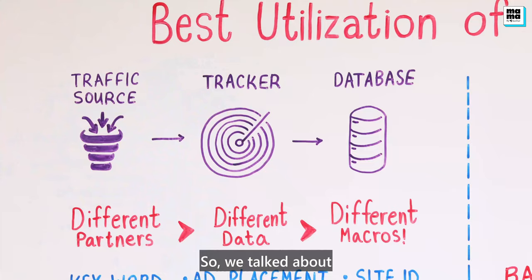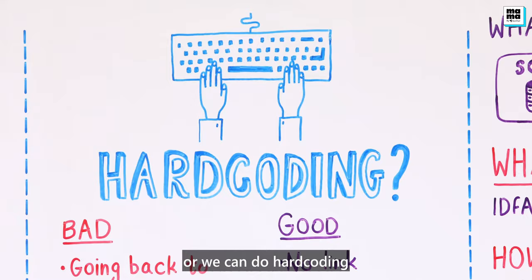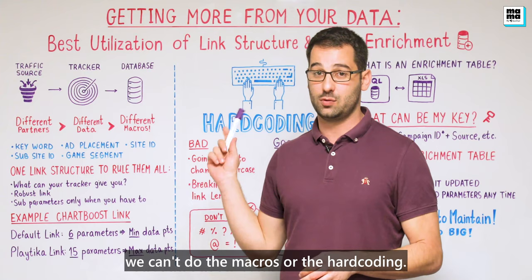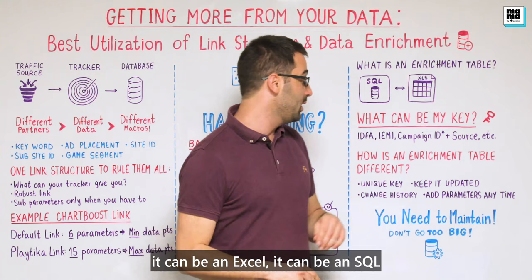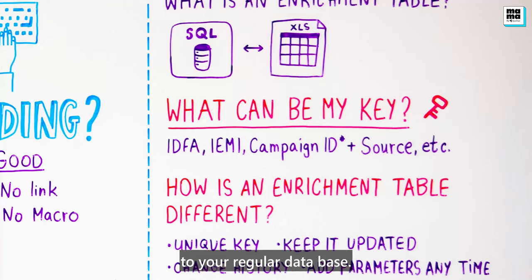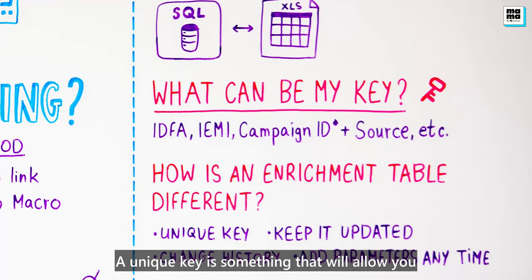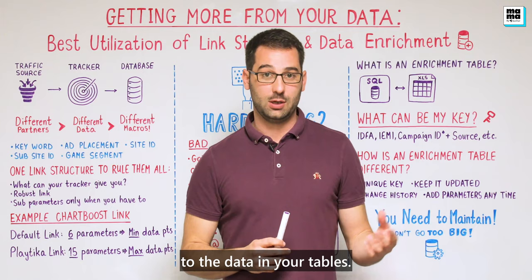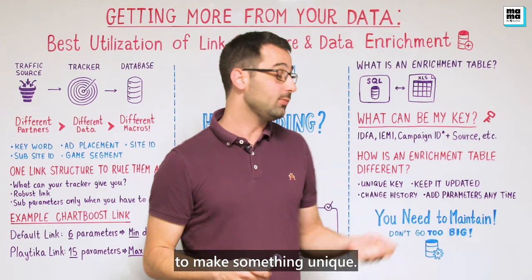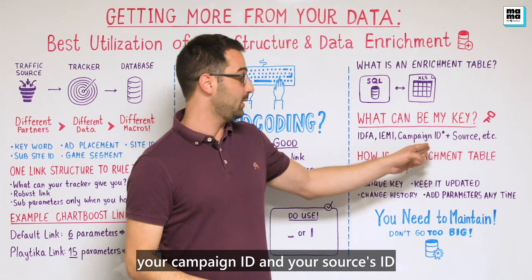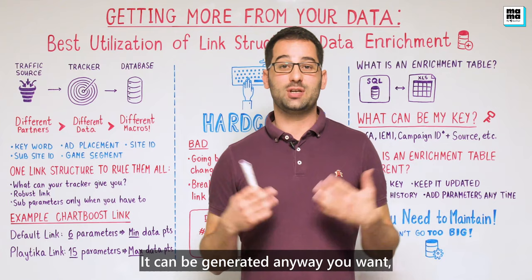Beyond macros and hard coding, there is an additional option to get more from your links: data enrichment tables. Data enrichment tables means you have a table outside your system — in Excel, in SQL — that allows you to connect more data and information to your regular database. The key requirement when using data enrichment is a unique key. A unique key allows you to connect the data from your links to the data in your tables. You can either generate a unique key yourself or use existing data — I recommend combining your ID, campaign ID, and source ID together to create one unique key.